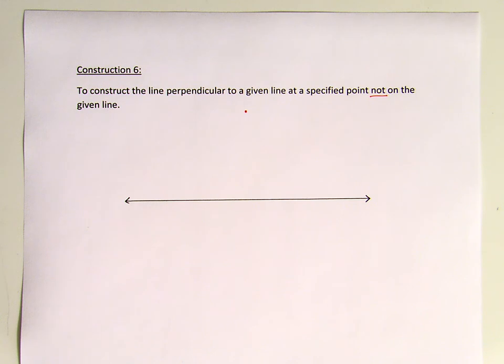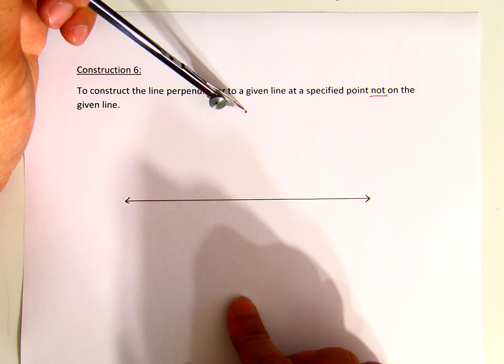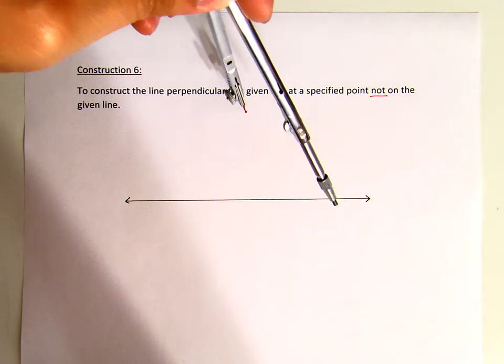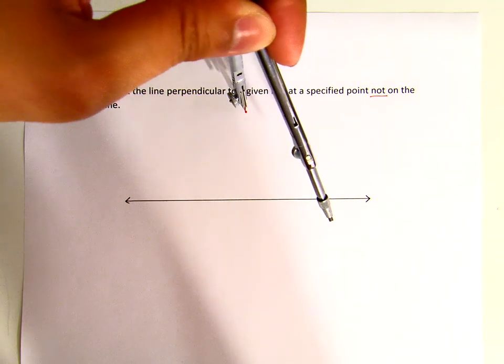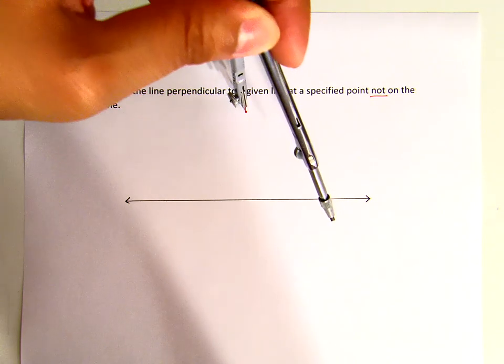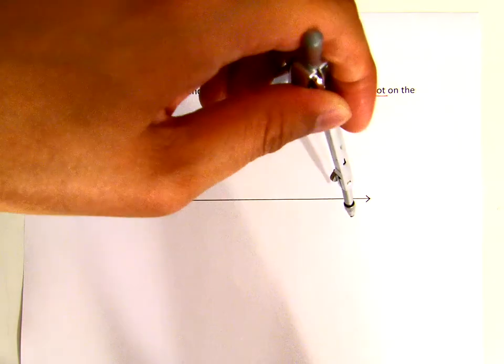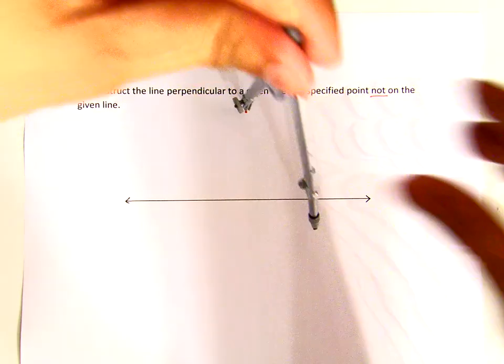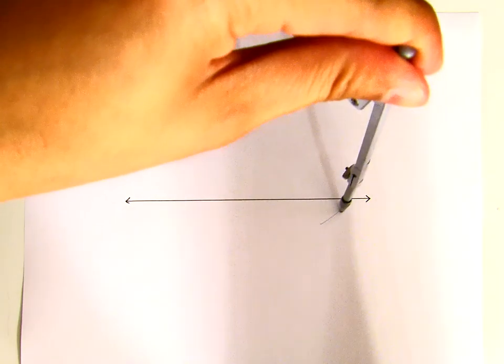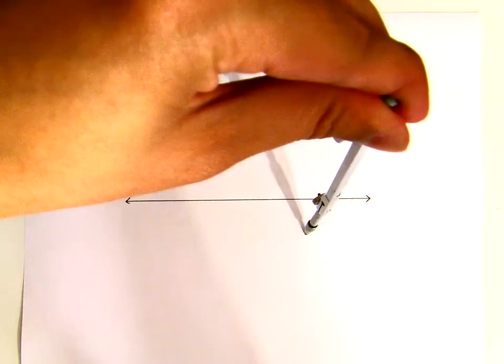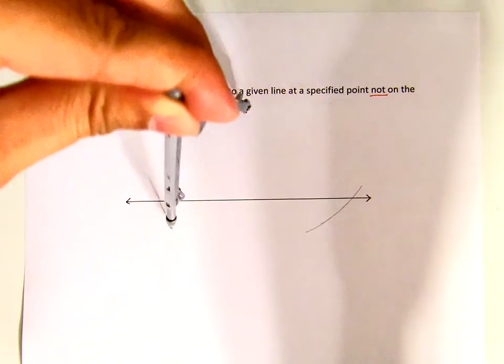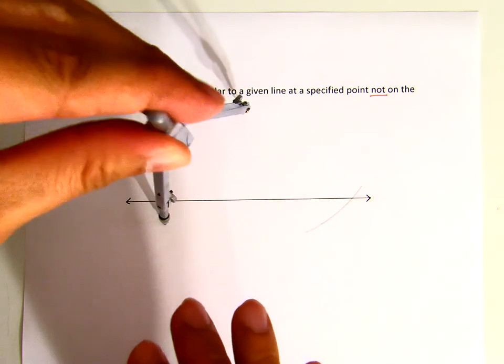Now what we will do - we will start by having our pivot leg of the compass at that point. For this construction especially, we need the compass to be very sharp. Now with a certain opening, I cut through this line here at this point, and at this point here as well.